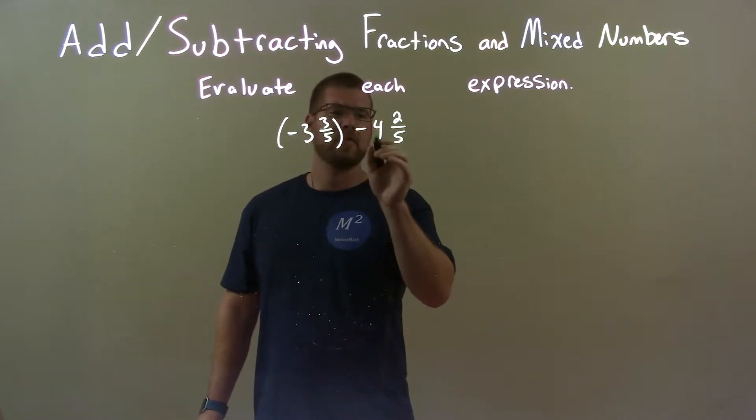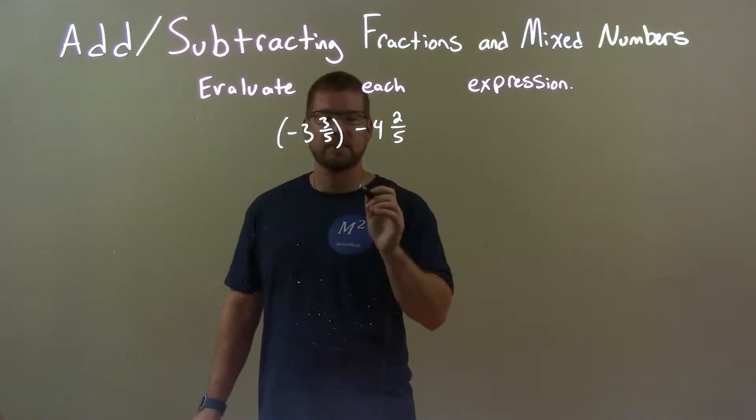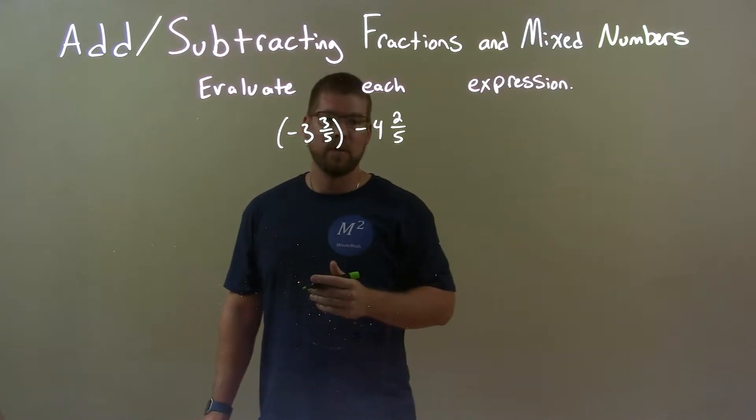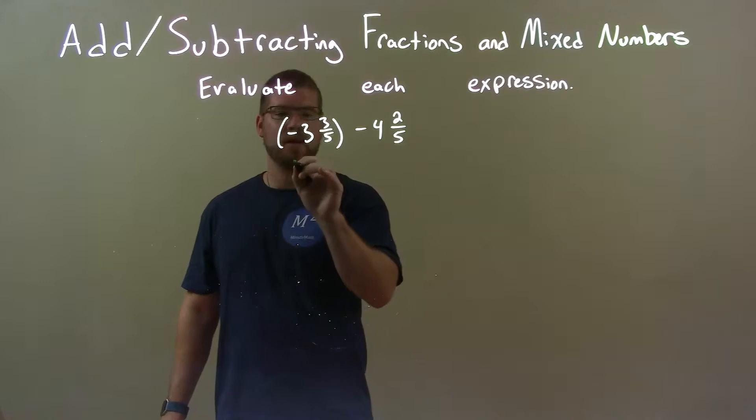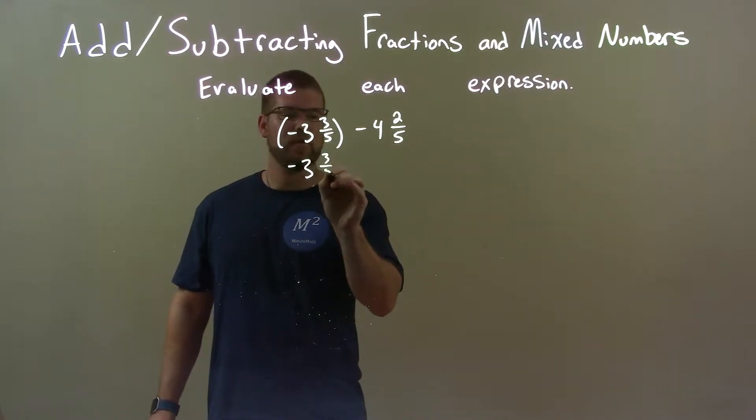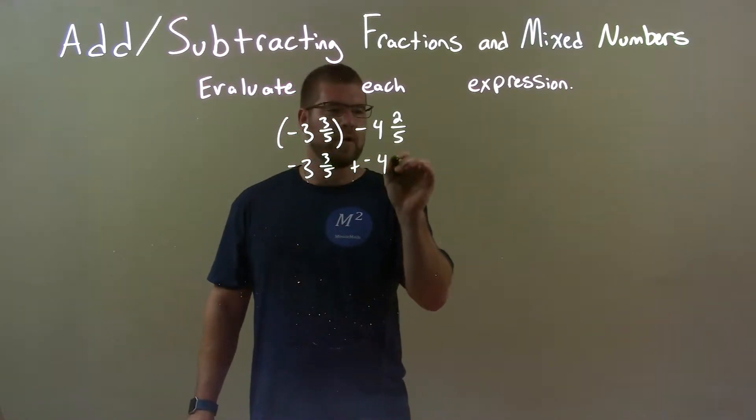Since we see the minus 4 and 2 fifths is subtracting and the first number is negative as well, we're adding basically two negative numbers. So I'm going to rewrite this as plus a negative, negative 3 and 3 fifths plus a negative 4 and 2 fifths.